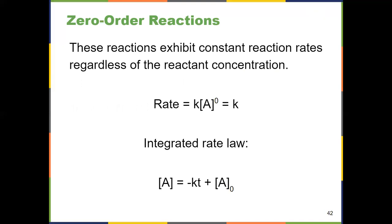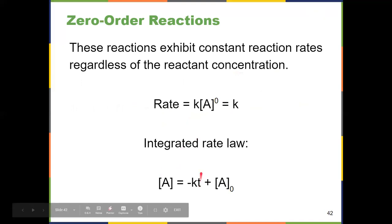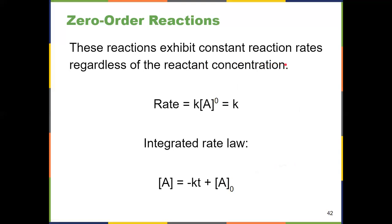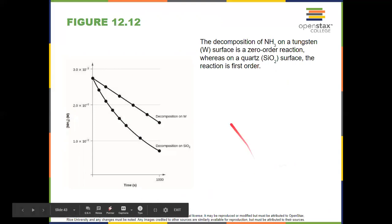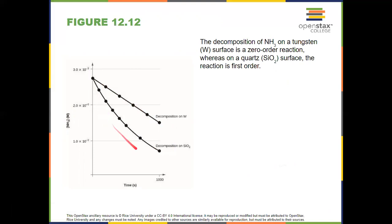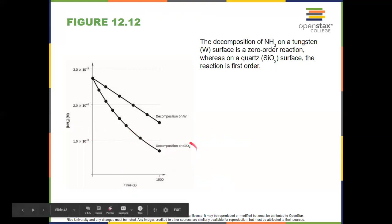For a zero-order reaction, the rate is raised to the zero power, which equals 1, so concentration drops out and rate equals K. The integrated rate law is: concentration equals negative KT plus A0, the initial concentration. Zero-order means a constant reaction rate regardless of reactant concentration — changing concentration does not change the rate. Not as common as first- or second-order reactions. For graphical identification: if concentration versus time is linear, it's zero-order; if not linear, it's not zero-order.